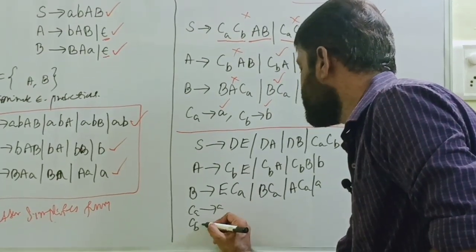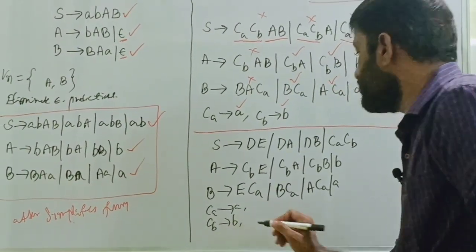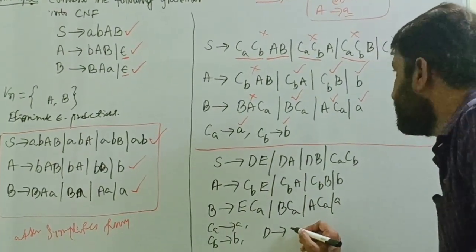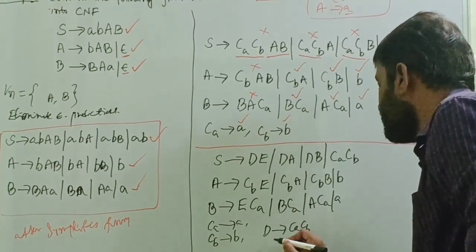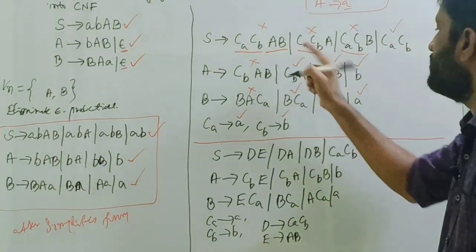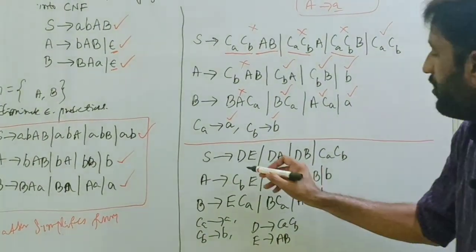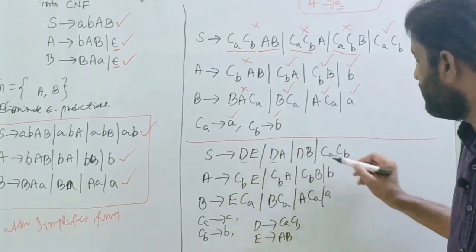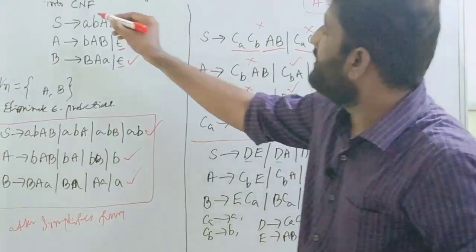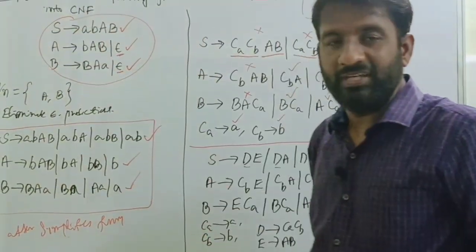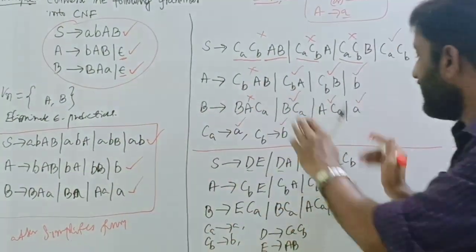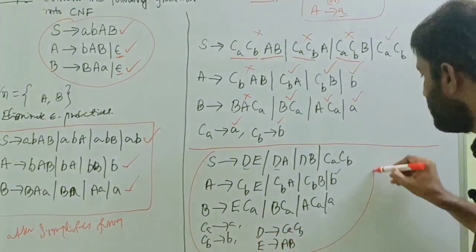Also, CA tends to 'a', CB tends to 'b'. The new non-terminals introduced are: D tends to CA CB, and E tends to CA CB. E tends to AB, so E tends to AB. Now every production has exactly two non-terminals or a single terminal only — so the grammar is fully converted into Chomsky Normal Form. This is the simplified CFG, and this is the final grammar in Chomsky Normal Form.